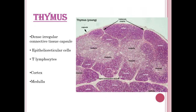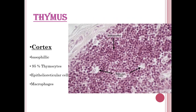A dense irregular connective tissue capsule encloses the thymus gland, sending septa inside that divide the gland into lobes and lobules. The peripheral side is called the cortex, the inner side is called the medulla, and both regions usually contain T lymphocytes.